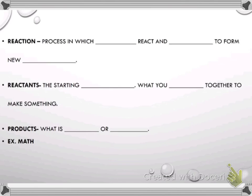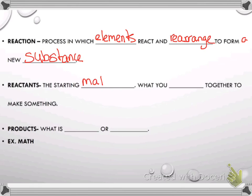So a reaction. A reaction is a process in which elements react and rearrange to form new substances. A reactant or reactants is the starting materials. You should be sort of familiar with that word now. We've talked about it a little bit. Reactants are the starting material. It's what you mix together to make something.